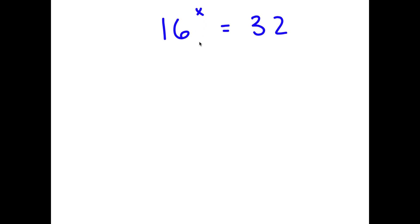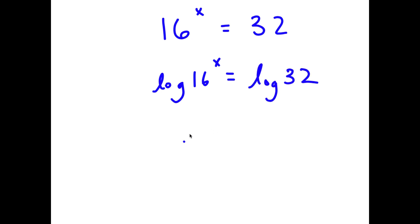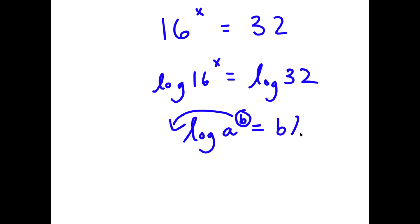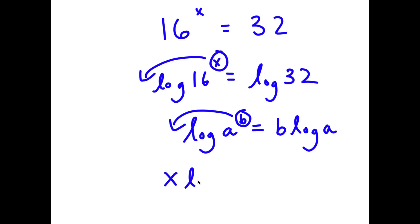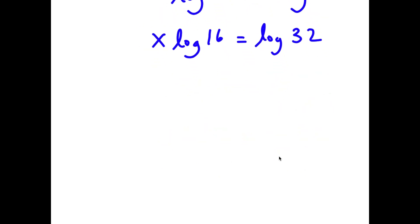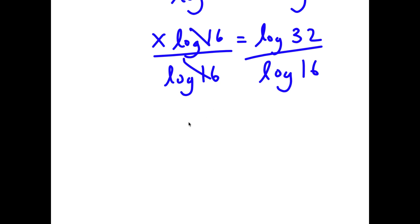In this problem I have 16 to the power of x equals 32. To solve this I have multiple methods. For my first method I'm going to take the log on both sides: log 16 to the power of x equals log 32. If I have log a to the power of b, I can move the exponent to the front, so x times log 16 equals log 32. Now I'm going to divide both sides by log 16, so x equals log 32 over log 16.